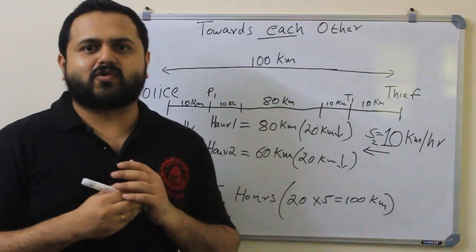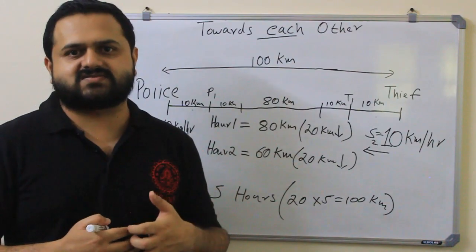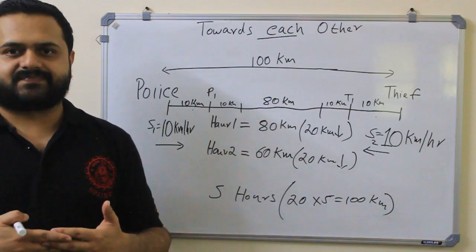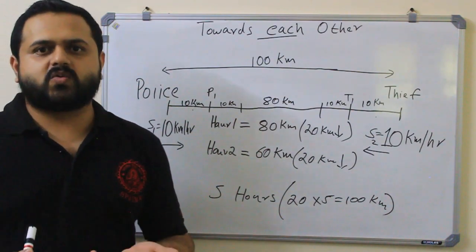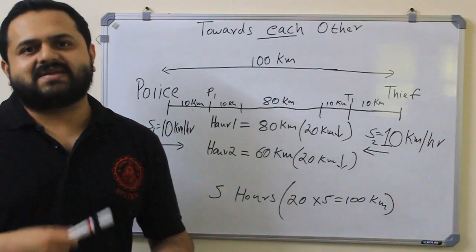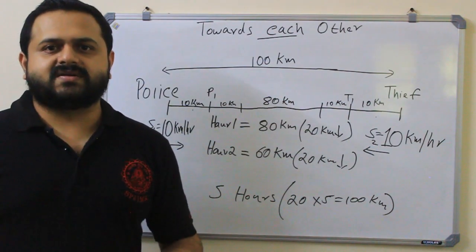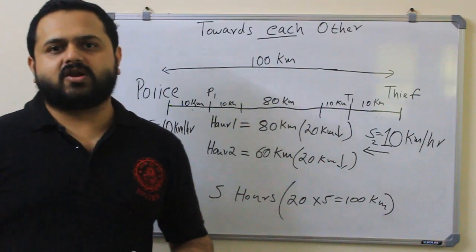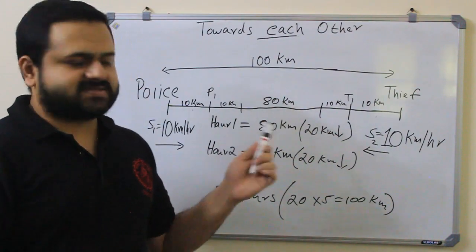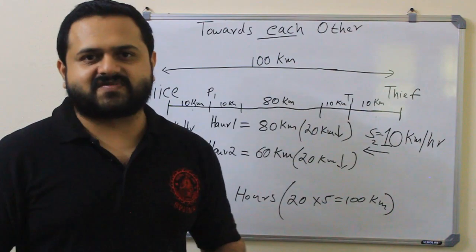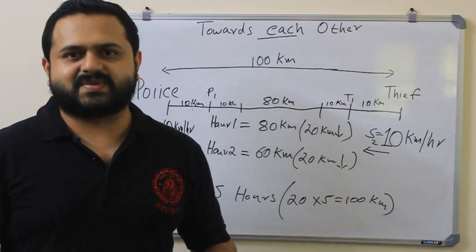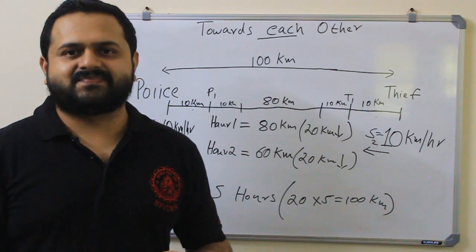We have looked at four cases: three subdivisions when moving in the same direction and one case when moving towards each other. I hope you understood how the relative speed formula is derived and the underlying concept. Please practice problems based on this. In my next video, I'm going to look at how clocks work and solve problems using the concept of relative speed. See you in the next lesson — happy learning!